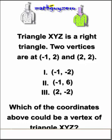Here's a coordinate geometry problem. They give us a right triangle, X, Y, Z. They give us two vertices. We've got to decide which of these vertices, if any, would make X, Y, Z a right triangle.